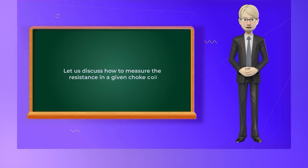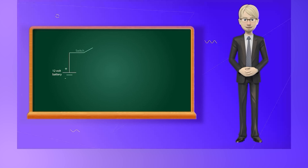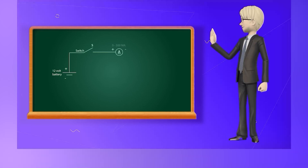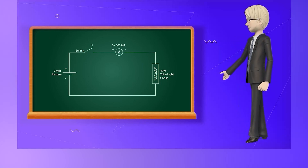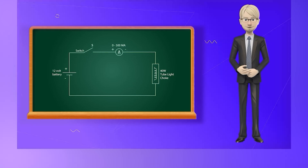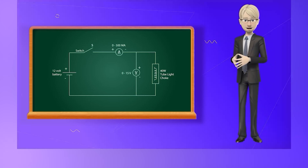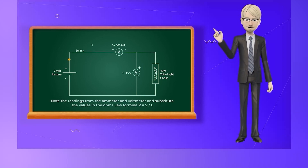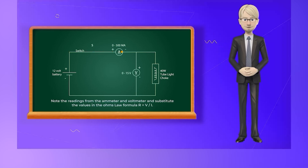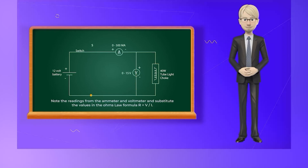Let us discuss how to measure resistance in a given choke coil. Take a tube light choke coil. Connect a 12V battery, a switch S, a tube light choke, and a moving coil ammeter ranging from 0 to 500 mA all in series. Connect a moving coil voltmeter in parallel to the circuit after the switch, ranging from 0 to 15V. Close the switch S. Note the readings from the ammeter and voltmeter and substitute the values in Ohm's formula: R = V / I.